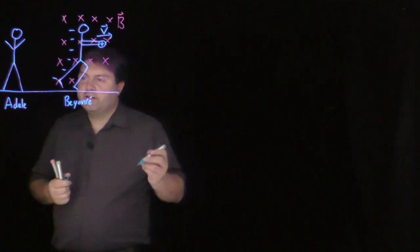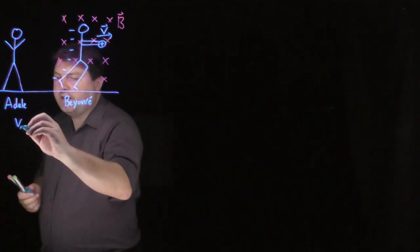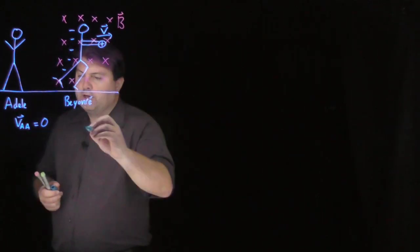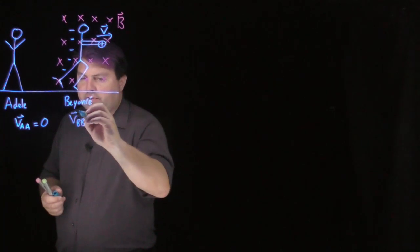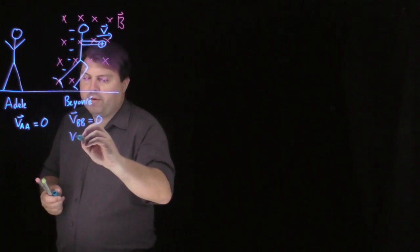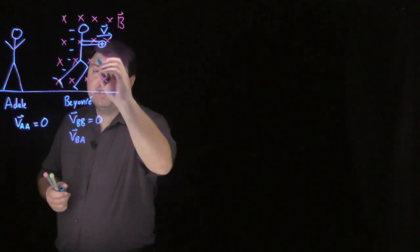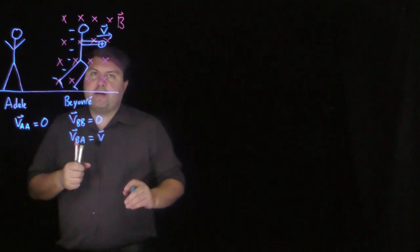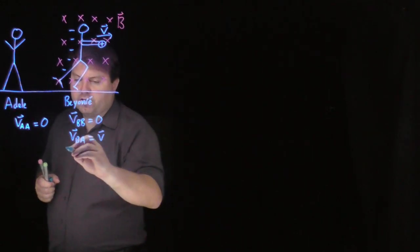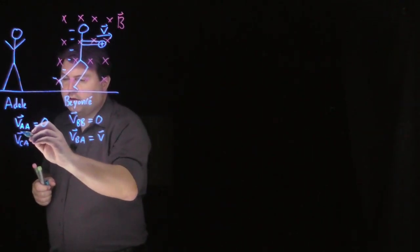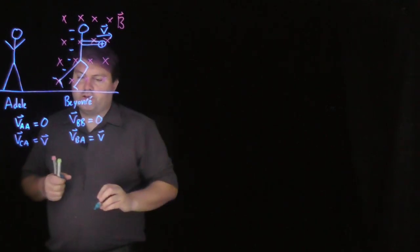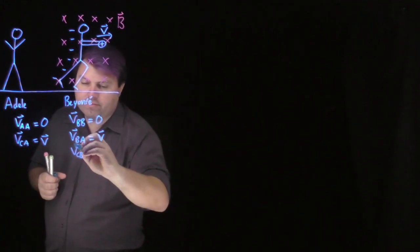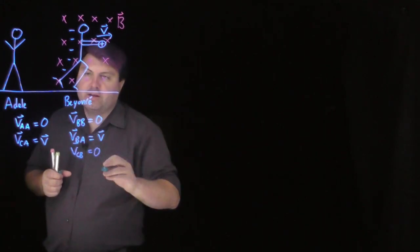So we can say that the velocity of Adele in Adele's reference frame, VAA, is of course zero. We can say that the velocity of Beyonce in Beyonce's reference frame is zero, but we can say that the velocity of Beyonce in Adele's reference frame is V. And the same goes for the charge, but then the charge in Beyonce's reference frame is going to be zero.